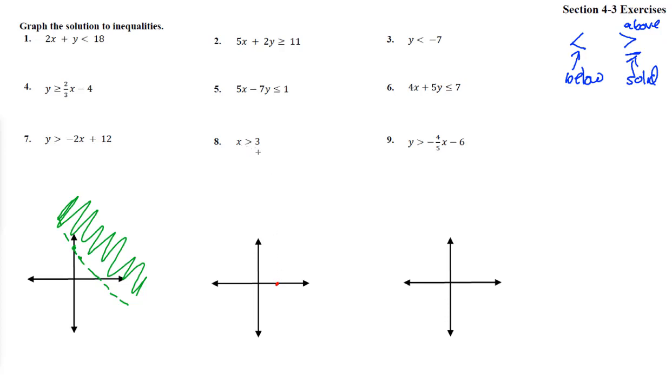Now notice we do not have x equal to 3, so we don't actually want that line as our answer. It is going to be a dashed line like that. And it says x is bigger than, and we can see it's over here. The one thing where we don't go above or below, x means left and right. So x is going to be bigger than 3.